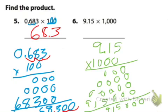And we need to move it over. So we start at the end, move it over, and we get 9,150.